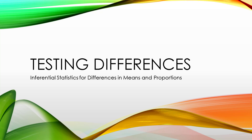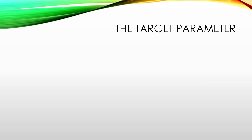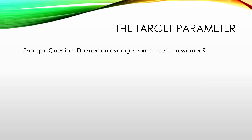In this series of videos we'll be talking about testing differences, specifically using inferential statistics for differences in means and proportions. We're going to start off by talking about comparing population means, and just to introduce this topic, let's talk about the target parameter.